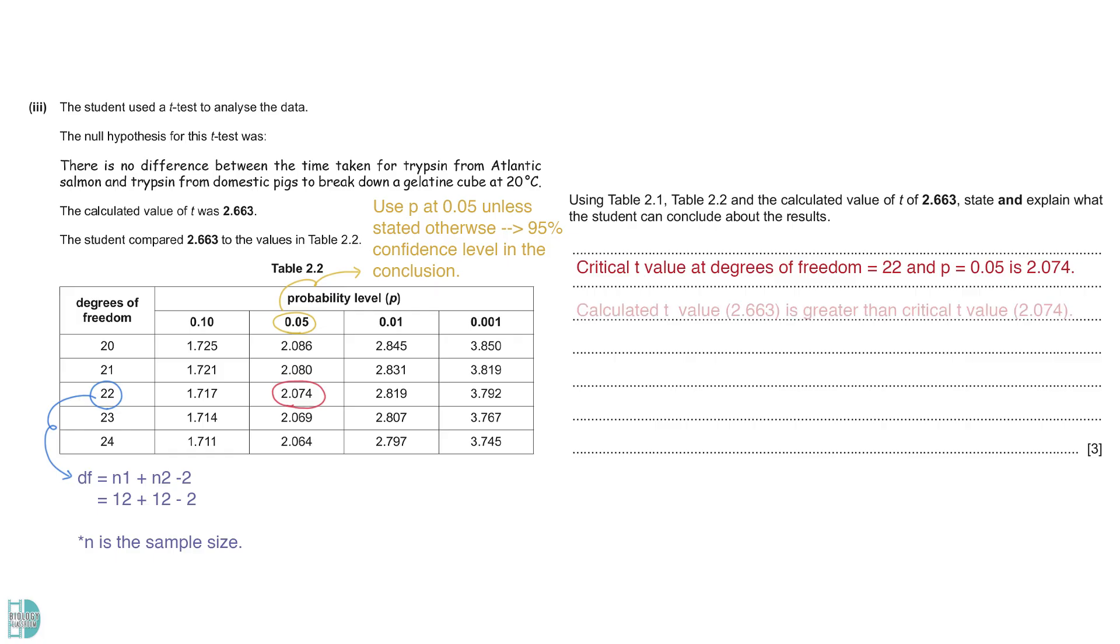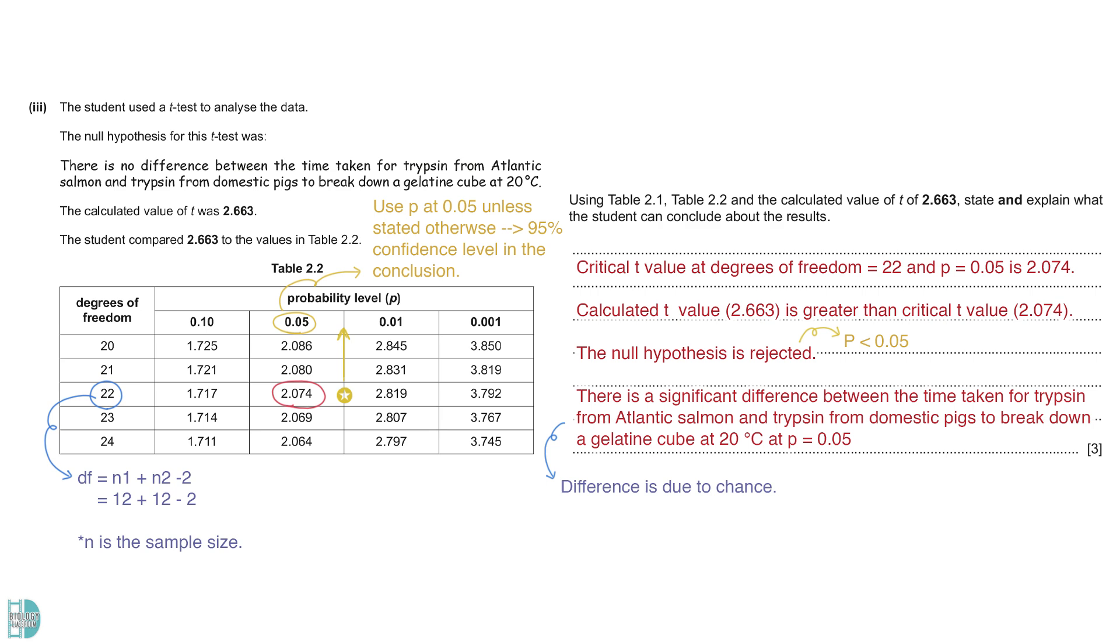In this case, the calculated t-value is greater than the critical t-value. This means the probability is smaller than 0.05. So, the null hypothesis is rejected. Since the null hypothesis says that there is no significant difference, we can conclude that there is a significant difference between the time taken for trypsin from Atlantic salmon and trypsin from domestic pigs to break down a gelatin cube at 20 degrees Celsius at p equals to 0.05. The difference we see in the mean values is not only due to chance.